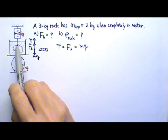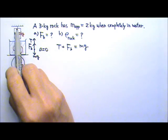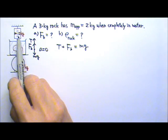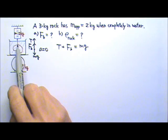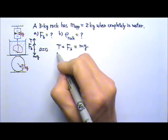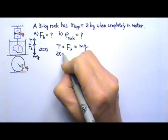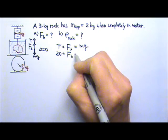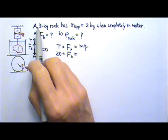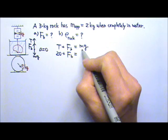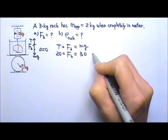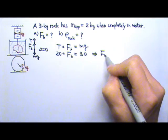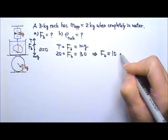The tension in the string is the same as the tension in the spring scale. If the spring scale reads 2 kg, that must mean the tension is 20 N. So 20 plus the buoyant force equals to the weight of this 3 kg rock. Mg is 30. That means the buoyant force must equal to 10 N.